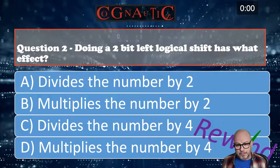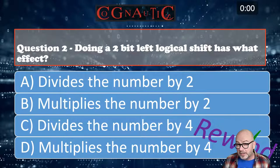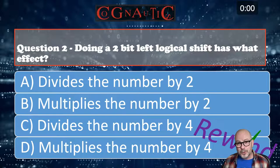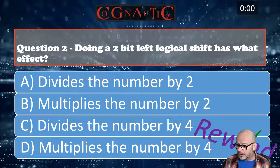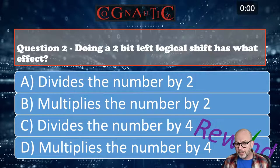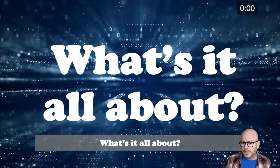Don't worry about being late - you can play back and watch the presentation at any time. So two bits shifted left gives you times four, because it doubles each time: two, four, eight, sixteen, thirty-two, sixty-four, one-twenty-eight, two-fifty-six, et cetera. It is D - multiply by four. That is the binary shift. Just a couple of things to remember on that.